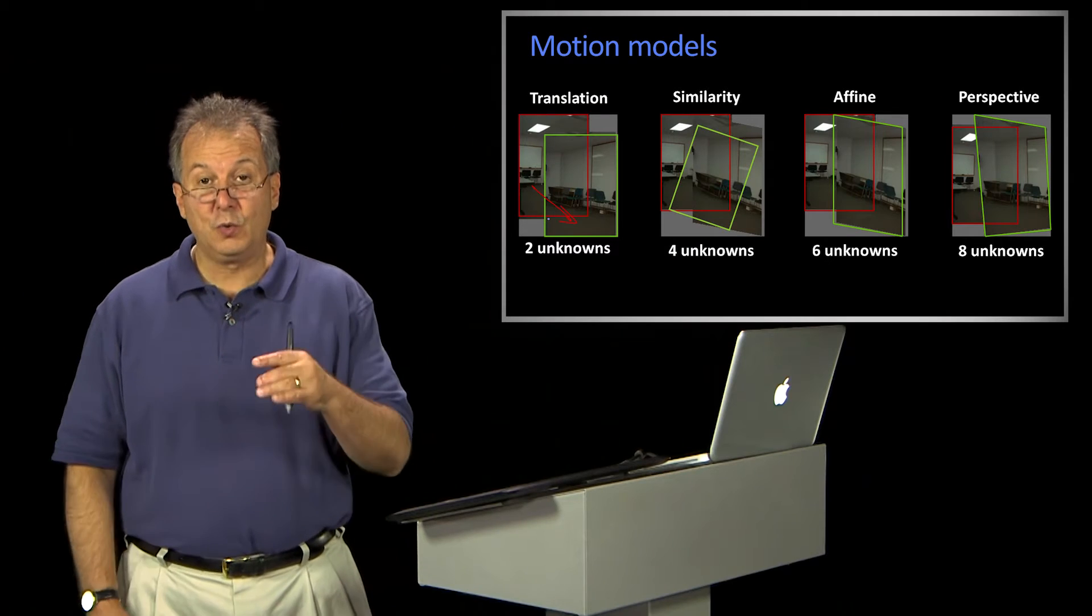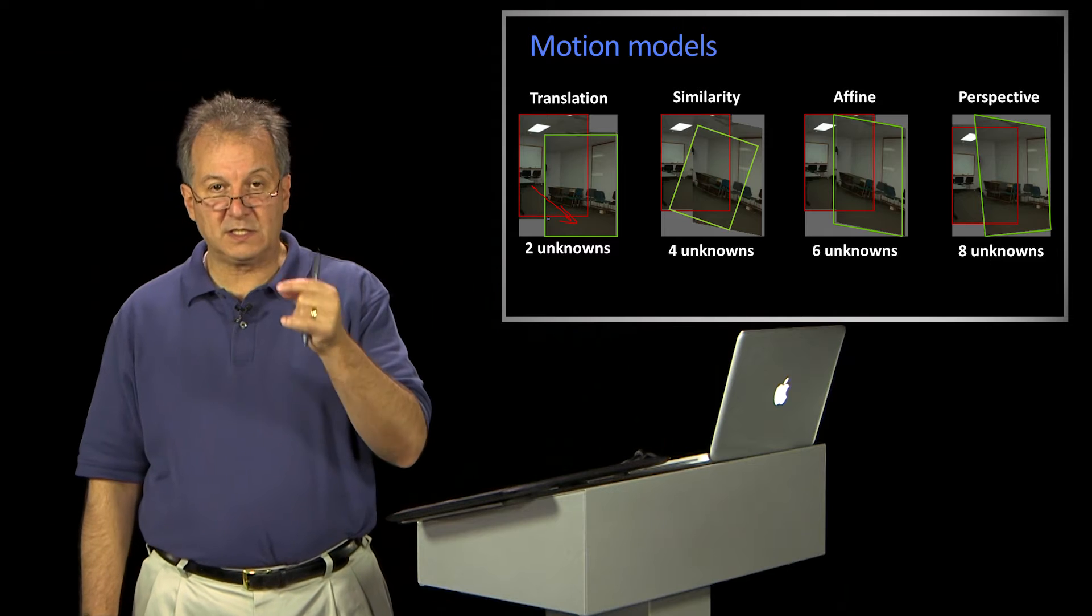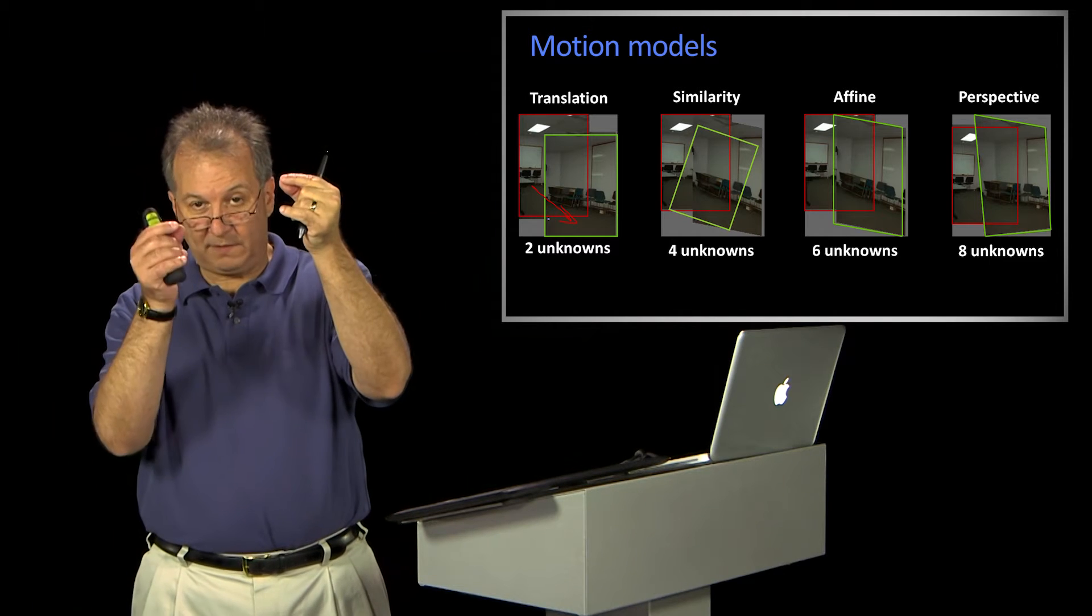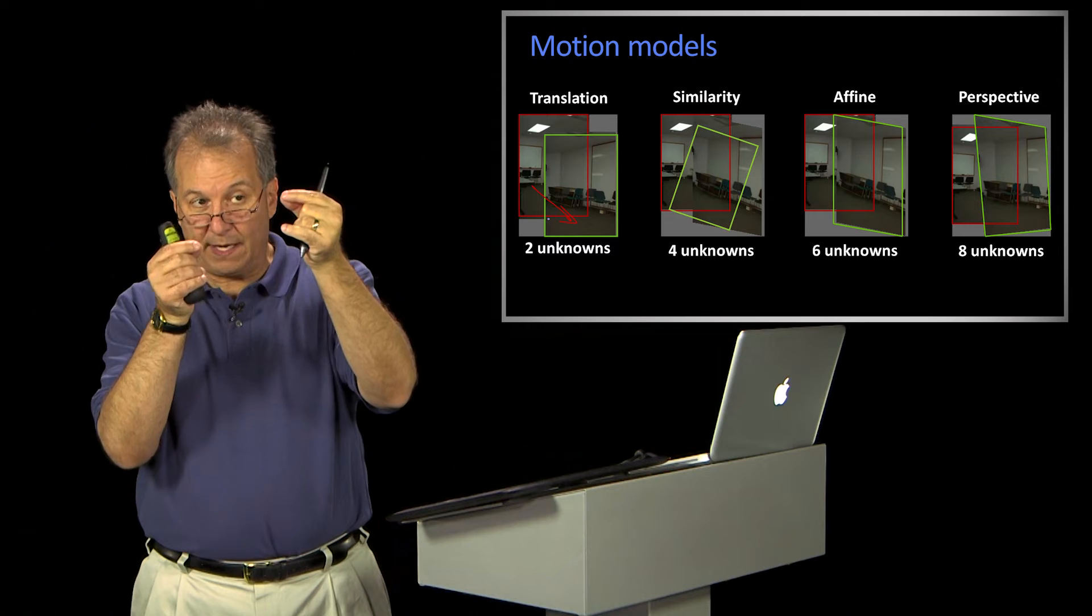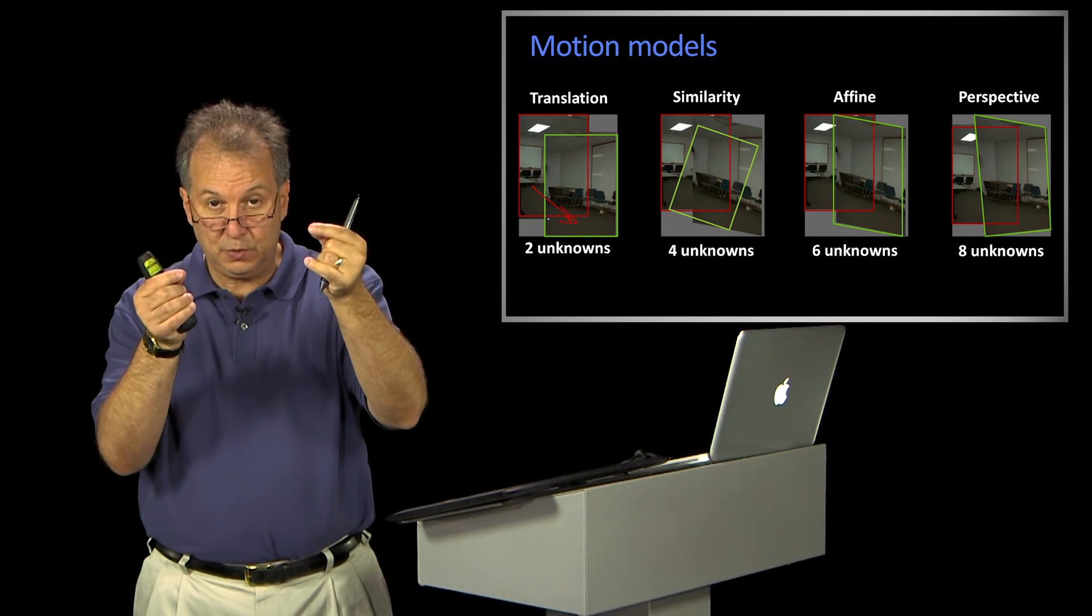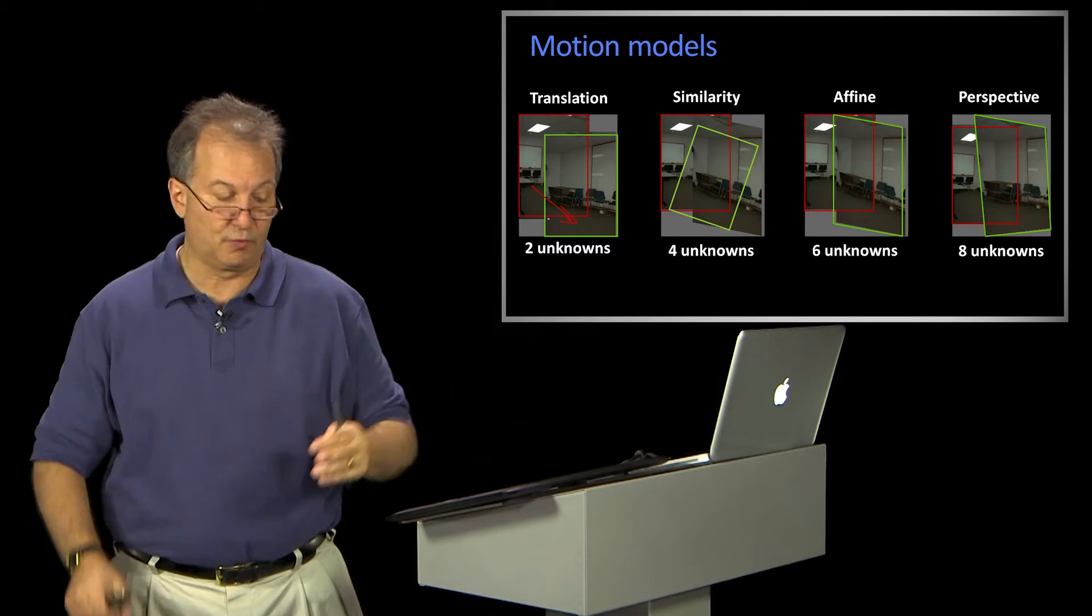Two. Two, right. So, since we get two equations for each point, we just need to track one point here, one point there. If I know that between them, I know how x changed, I know how y changed, two equations, two unknowns, great, everything's good.